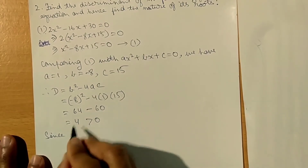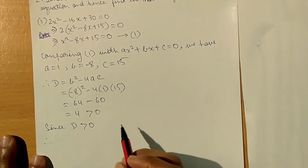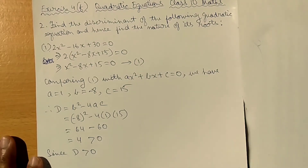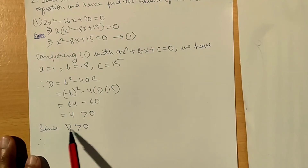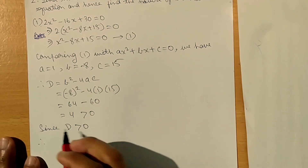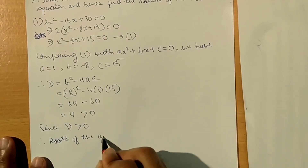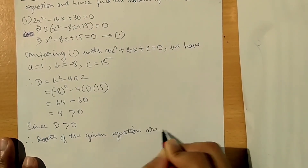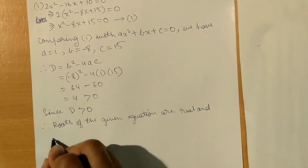Since the discriminant is greater than zero, therefore the nature of roots is real and distinct. Since D is greater than zero, therefore the roots of the given equation are real and distinct. Thank you.